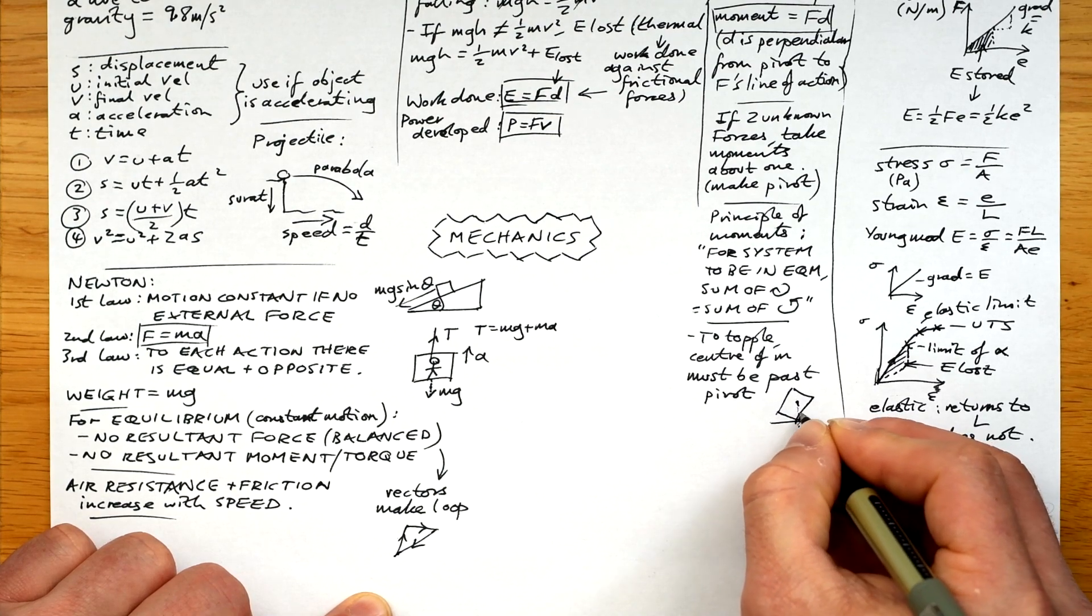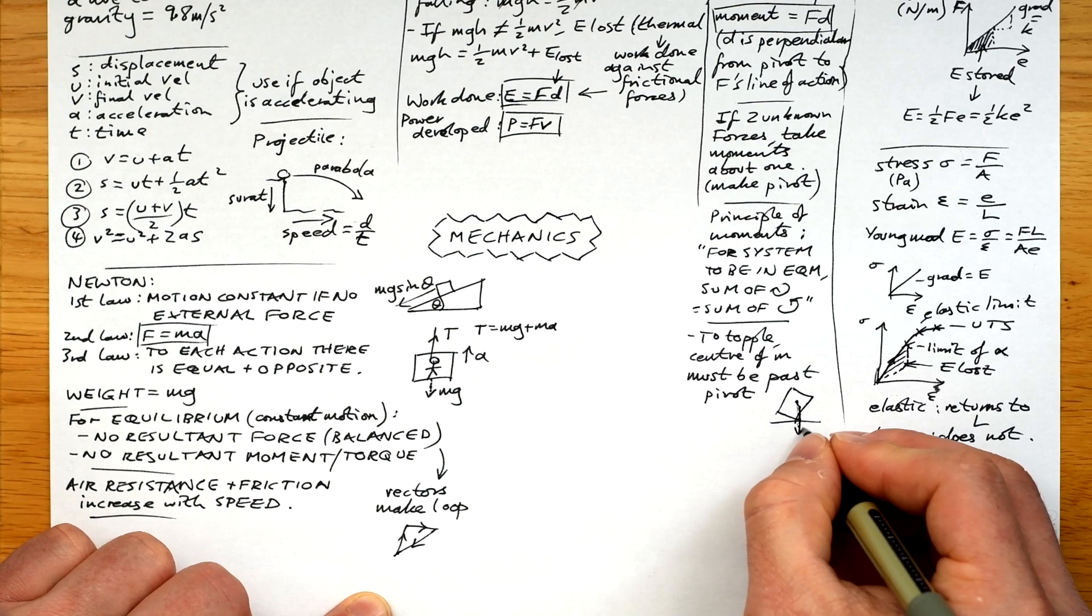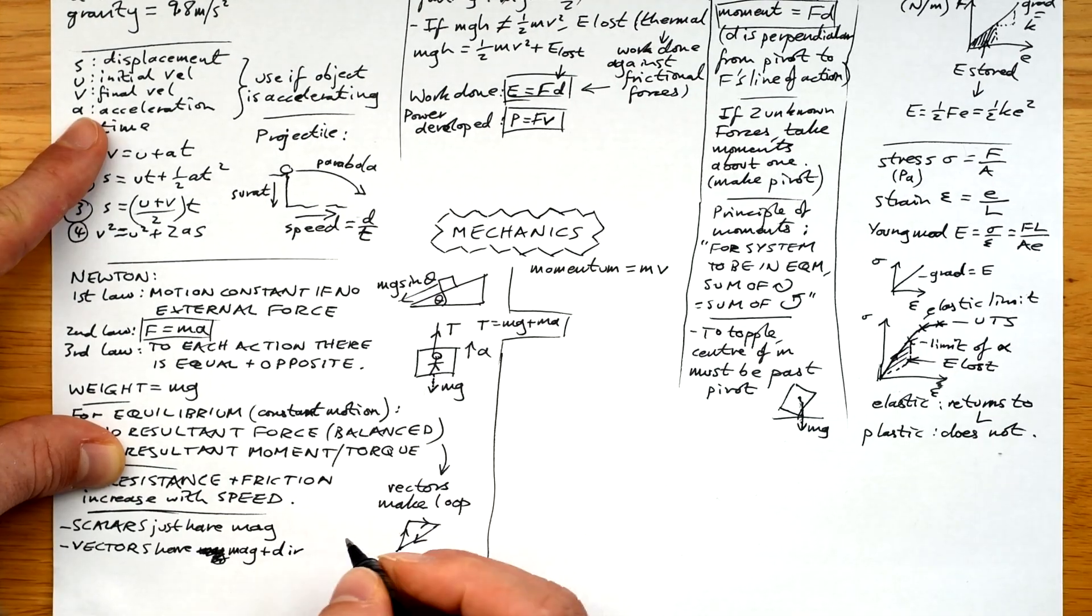For an object to topple, the centre of mass must be past the pivot so that the moment of the weight does pull it the wrong way, as it were.